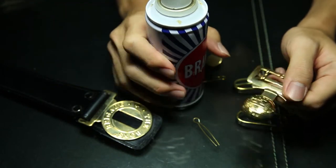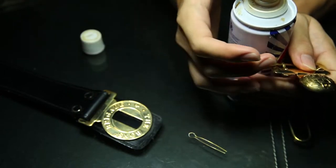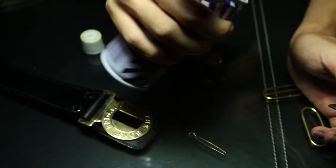First, get your Brasso. Cover the end of the Brasso with your fingertips and turn it upside down and shake it a bit.